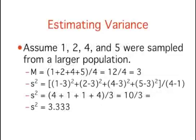Let's take a concrete example. Assume the scores 1, 2, 4, and 5 were sampled from a larger population. To estimate the variance in the population, you would compute s squared as follows. First, you calculate the mean, which turns out to be 3. You then subtract the mean from each score and square the differences. You then add up all these squares, and finally you divide the score by the number of numbers minus 1. In this example, this leaves us with an estimated population variance of 3.33.